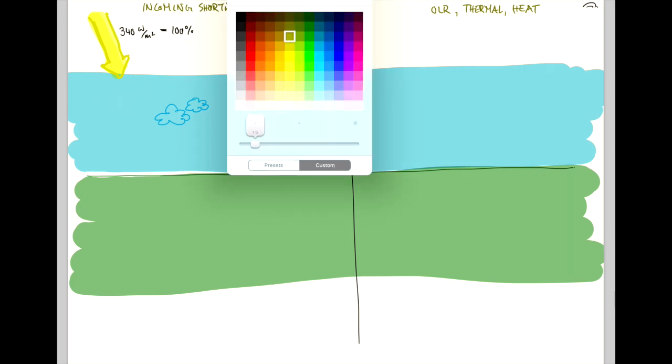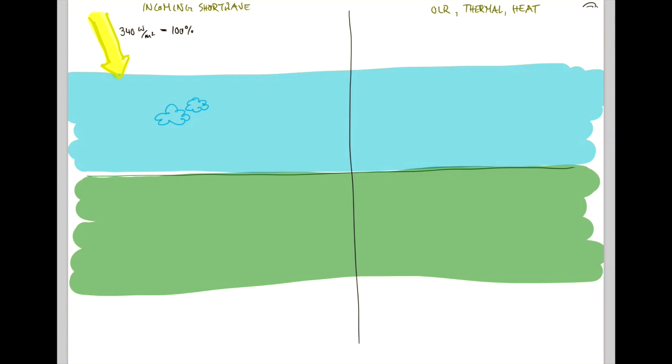Clouds play an important role because they reflect a good fraction of this incoming solar radiation straight back out - namely 23%, reflected by clouds and the atmosphere, mostly clouds.